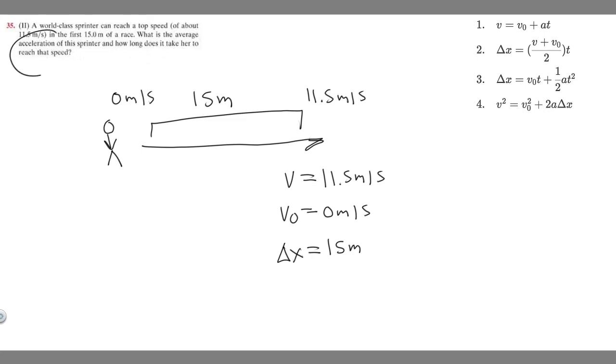We're trying to find average acceleration and the time it takes for them to reach that speed. So we're trying to find a which is acceleration and t which is the amount of time. I think the best thing to do is start by finding a because that's what they ask us to find first.